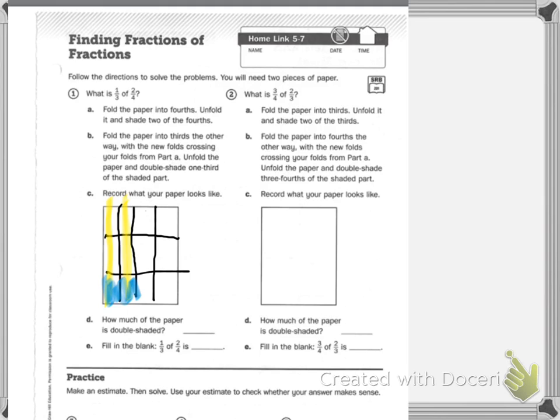So how much of the paper is shaded? So first I need to count all of my squares. I have twelve, and then I have two shaded. So one-third of two-fourths is two-twelfths.